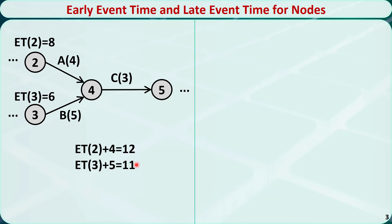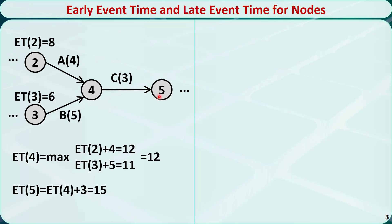So we have two options, and we need to determine which one to choose. We know that node 4 can happen only if both activities A and B are finished. At time 11, although activity B is finished, activity A is still not finished. So we need to pick the larger number. Therefore, the early event time of node 4 should be 12. Now the earliest time node 4 can happen is at time 12, and the duration of activity C is 3, so the earliest time node 5 can happen is 12 plus 3, equal to 15.